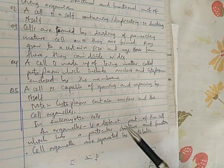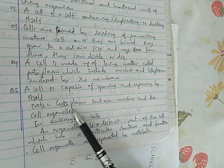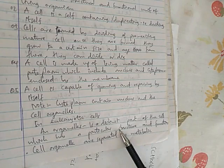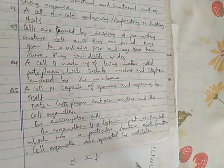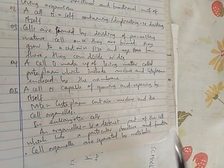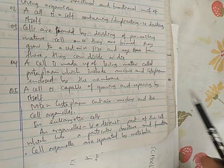But number four, a cell is made up of living matter, called protoplasm, which includes nucleus and cytoplasm, enclosed by membrane. These are in all cells. Except here, prokaryotic cells, they don't have nucleus. But number five, a cell is capable of growing and repairing by itself. It grows and repairs itself. If something is damaged inside the cell, it repairs itself. It's self-sufficient. A cell is a self-contained unit, as I explained in the first clip. Note that cytoplasm contains nucleus and cell organelles. In eukaryotic cell, an organelle is a distinct part of a cell which has a particular structure and function. This definition, you must know it. An organelle is something that is inside the cell, those things inside the cytoplasm are called organelles. So an organelle is a distinct part of a cell which has particular structure and function. So each organelle has its specific structure and function, as you shall see when you will be studying one organelle to another.